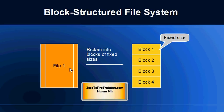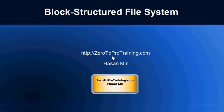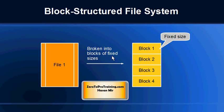This is how a file is stored in a Hadoop file system — the file will be broken down into blocks of fixed sizes. Hello, in this session we will talk about block-structured file systems. This is Hassan Meir from zerotoprotrain.com. In previous sessions we have talked about characteristics of a Hadoop file system, how it addresses the limitations of distributed file systems, and how it is only for applications that deal with big data. Now we're going to talk about how a file is stored in the Hadoop file system.